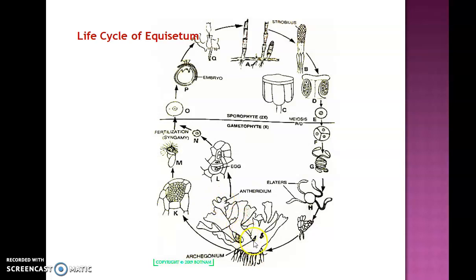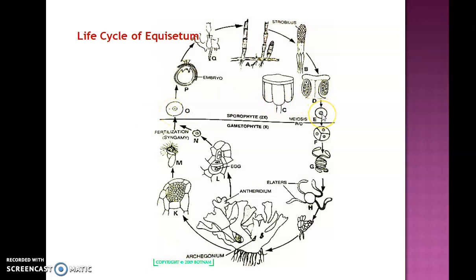The antheridium develops antherozoids and the archegonium develops an egg inside it. The antherozoids are spirally arranged and multiflagellate. After maturity, they reach the egg, resulting in formation of the zygote. The zygote forms the first step of sporophytic generation. In Equisetum, sporophytic generation alternates with gametophytic generation: the sporophytic generation starts with the diploid zygote and ends with the formation of haploid spores, while the gametophytic generation starts with haploid spores and ends with formation of the zygote.